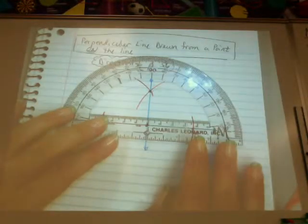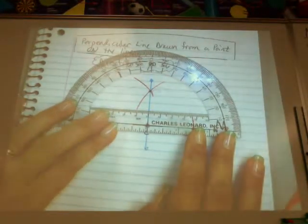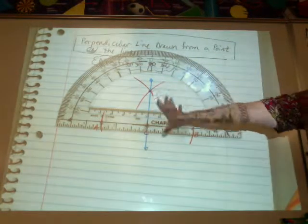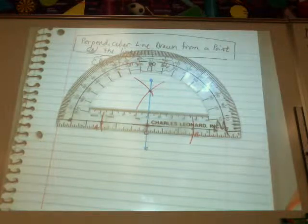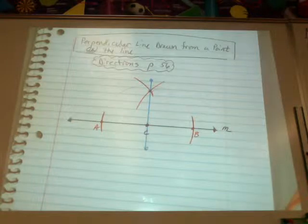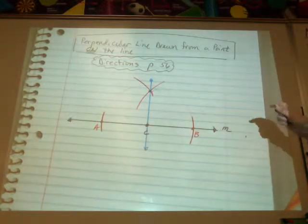So if I took my handy-dandy protractor and put it on here, how well did we do? We're directly on the money, aren't we? So, yay. So that is your perpendicular line drawn from a point that is actually on the line.